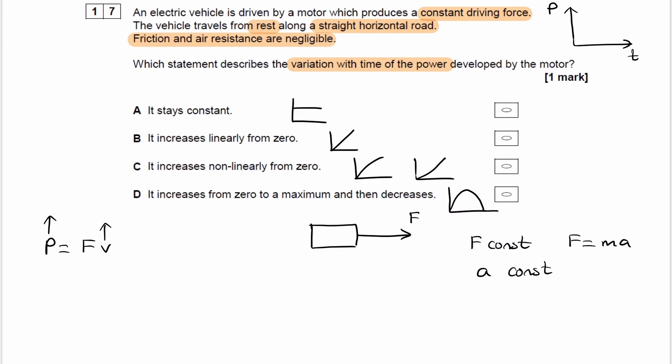Therefore it can't be A. A says the power stays constant with time. It can't be D. D says it increases from 0 to a maximum and then decreases. Our power will not decrease over time. If the velocity is continuously increasing, the power will continuously increase as well.